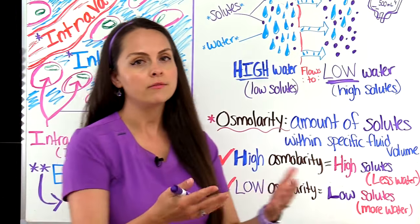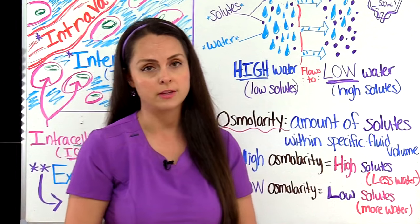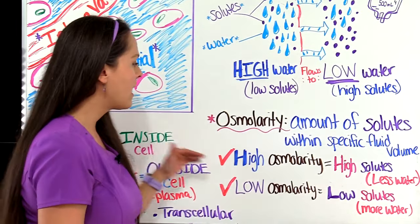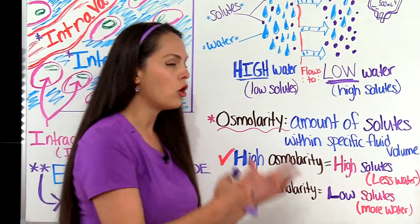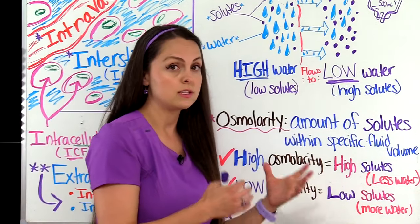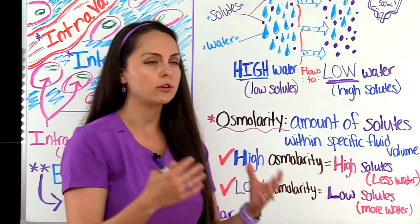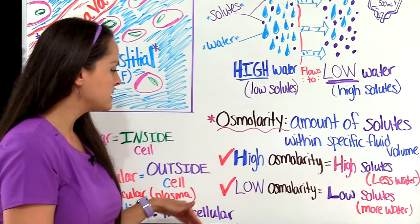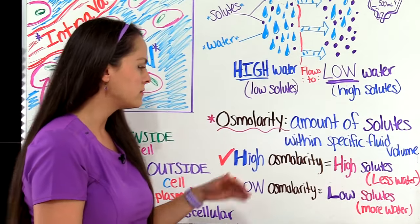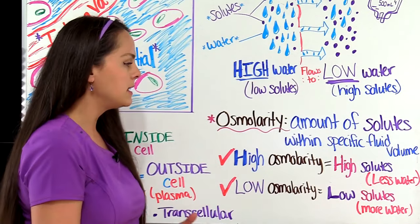We can term fluids as having a high osmolarity or a low osmolarity. Whenever a fluid has a high osmolarity, we're saying it has a lot of solutes in that fluid, and whenever something has a lot of solutes it has less water. On the flip side, if a fluid has a low osmolarity, it has a low amount of solutes, meaning it's going to have more water in it.